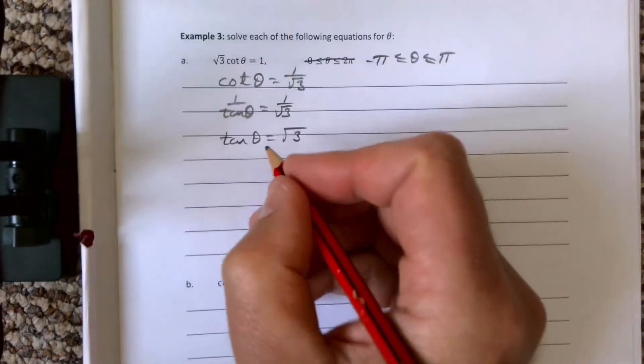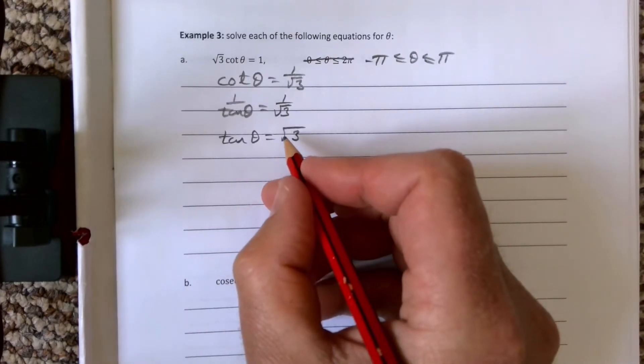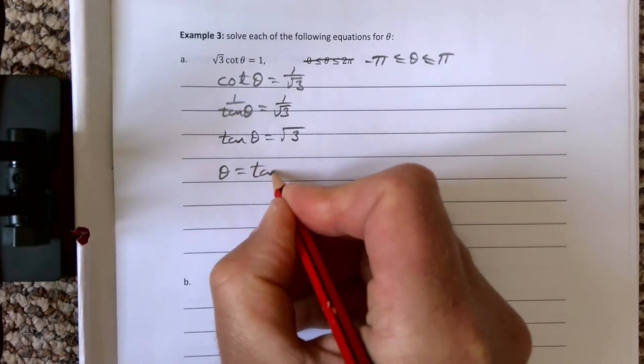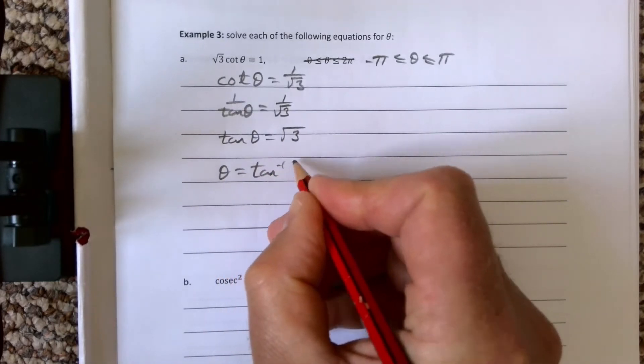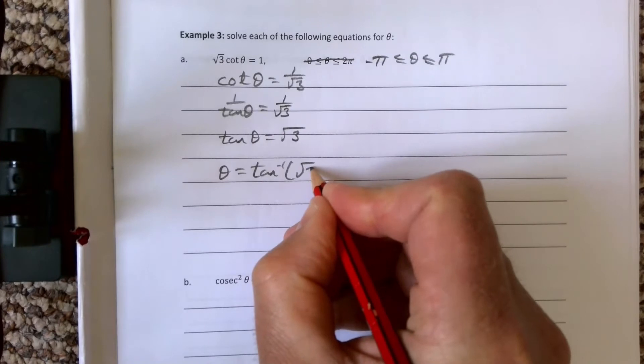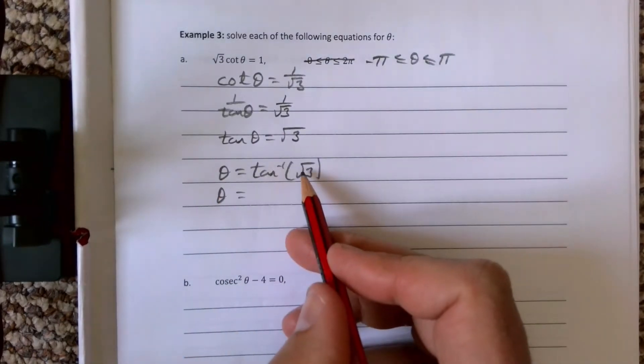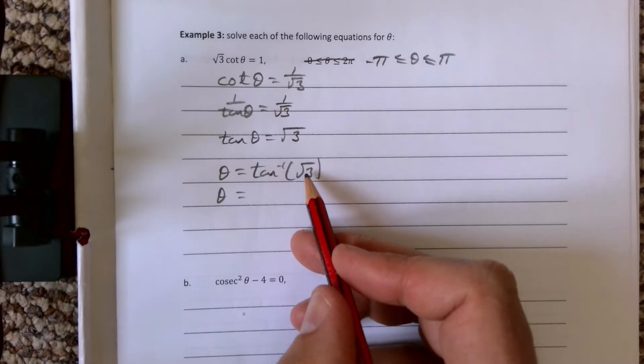We need to find our basic angle. Theta is tan⁻¹ of √3, and if you put that in your calculator, if we were in degrees √3 would give us 60 degrees.